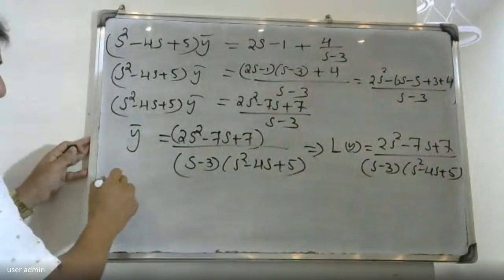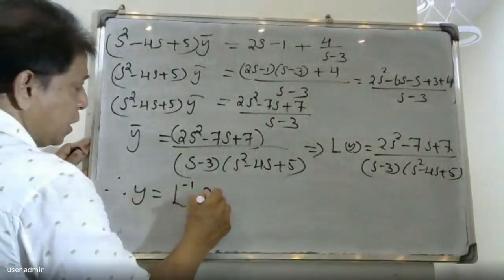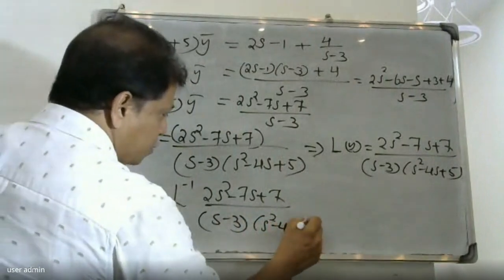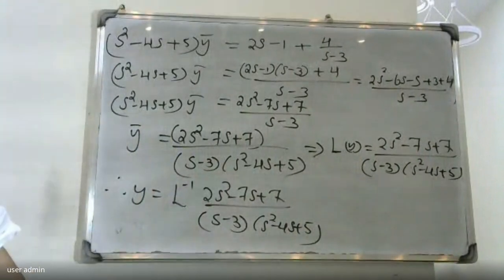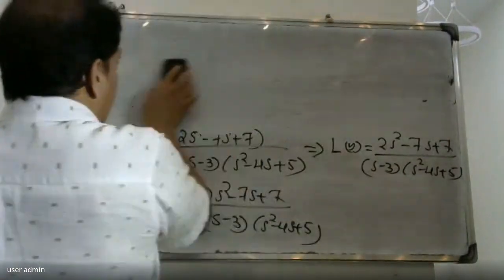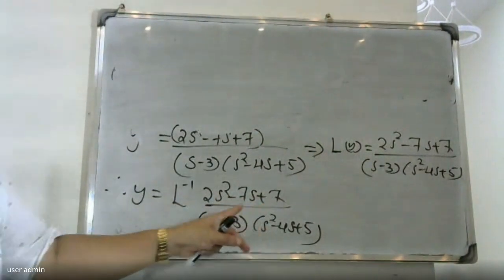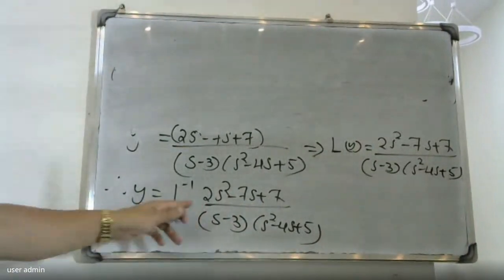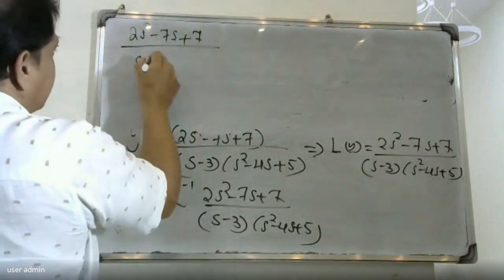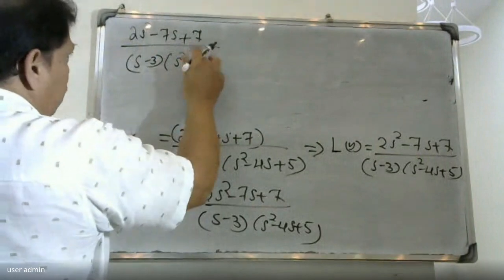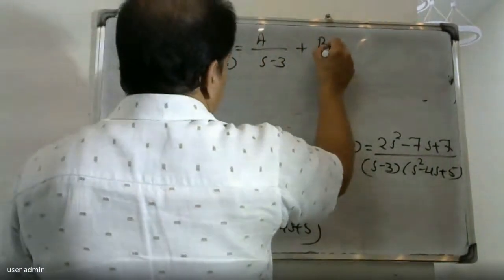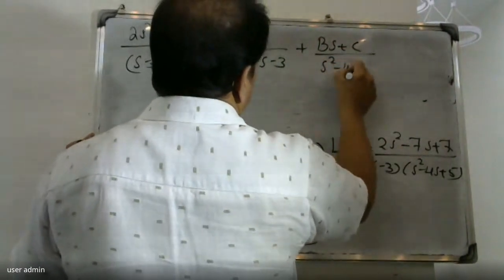Therefore, y is equal to the inverse Laplace transform of (2s squared minus 7s plus 7) divided by (s minus 3)(s squared minus 4s plus 5). We now apply partial fractions: the expression equals A over (s minus 3) plus (Bs plus C) divided by (s squared minus 4s plus 5).